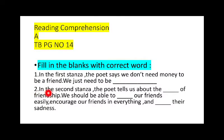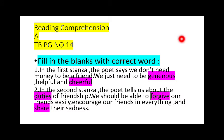Wait — the second question. In the second stanza, the poet tells us about the duties of friendship. We should be able to forgive our friends easily, encourage our friends in everything, and share their sadness. Now the answers: in the first stanza, we just need to be generous, helpful, and cheerful. In the second stanza, the duties of friendship — we should forgive our friends easily, encourage them in everything, and share their sadness.